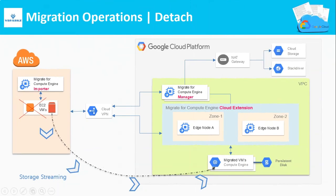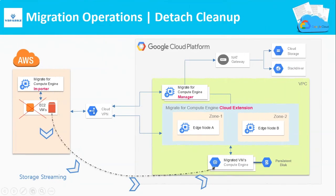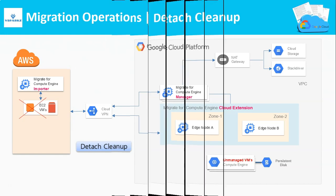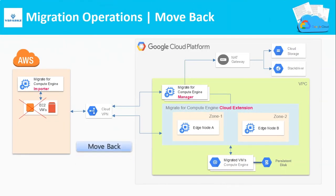Next is to perform a detach operation, which attaches the native disks to the compute engine VMs and starts the VMs in Google Cloud. After the VMs are detached and your testing is over, you can start the detach cleanup. Each VM is then marked as unmanaged by Migrate for Compute Engine, so that you can freely use the migrated VMs in Google Cloud. If the validation fails, you can do a move back of your VMs to the source.